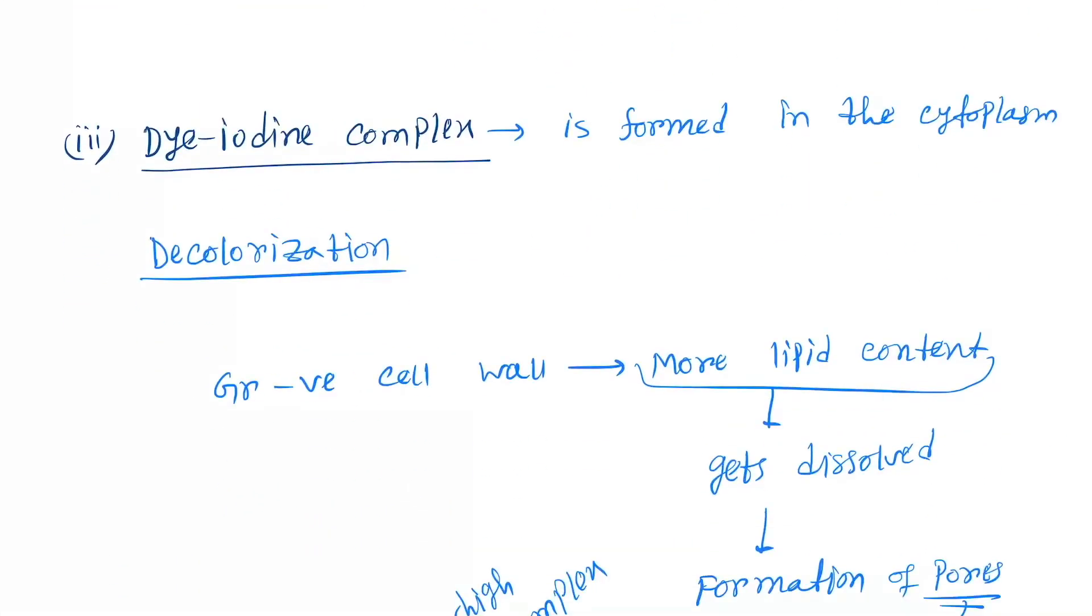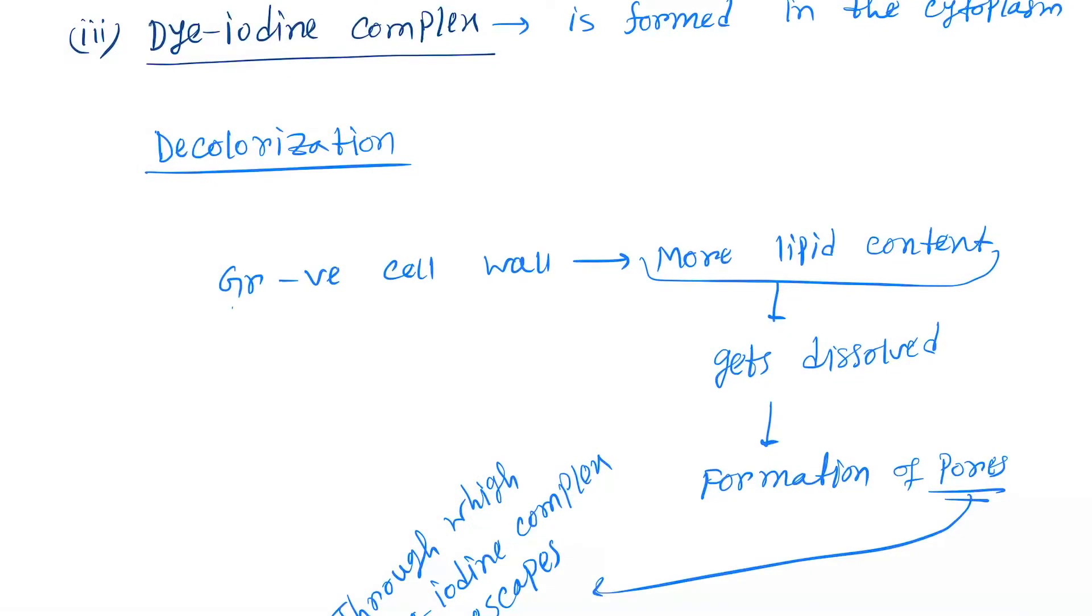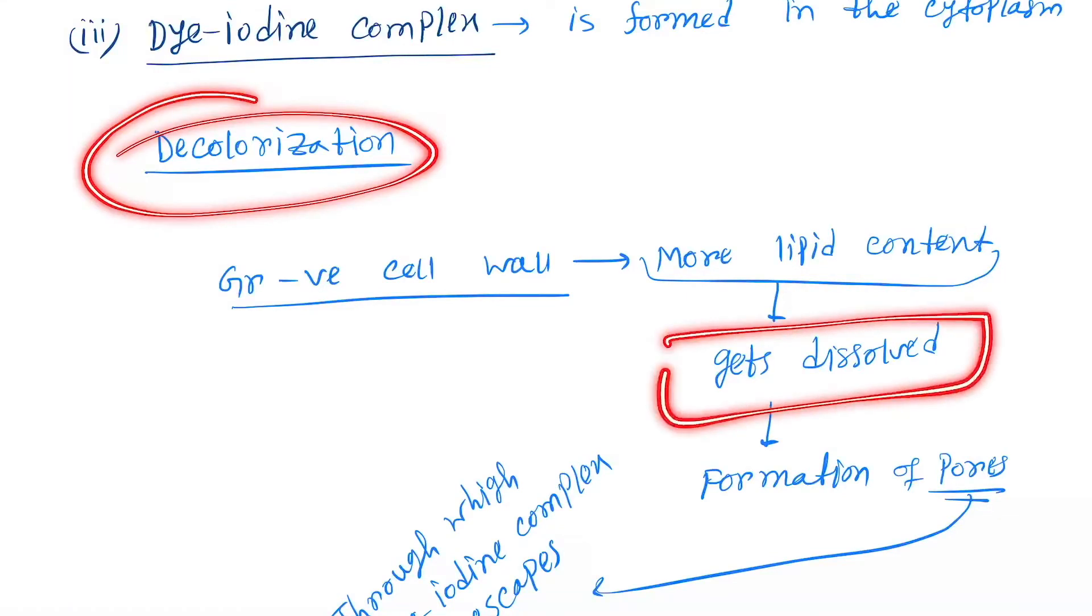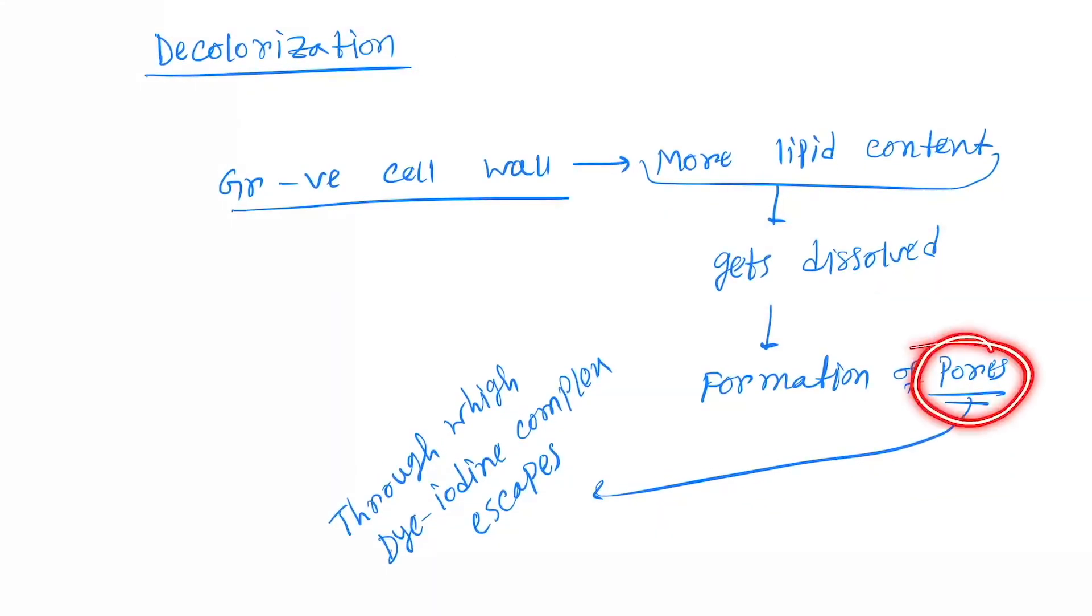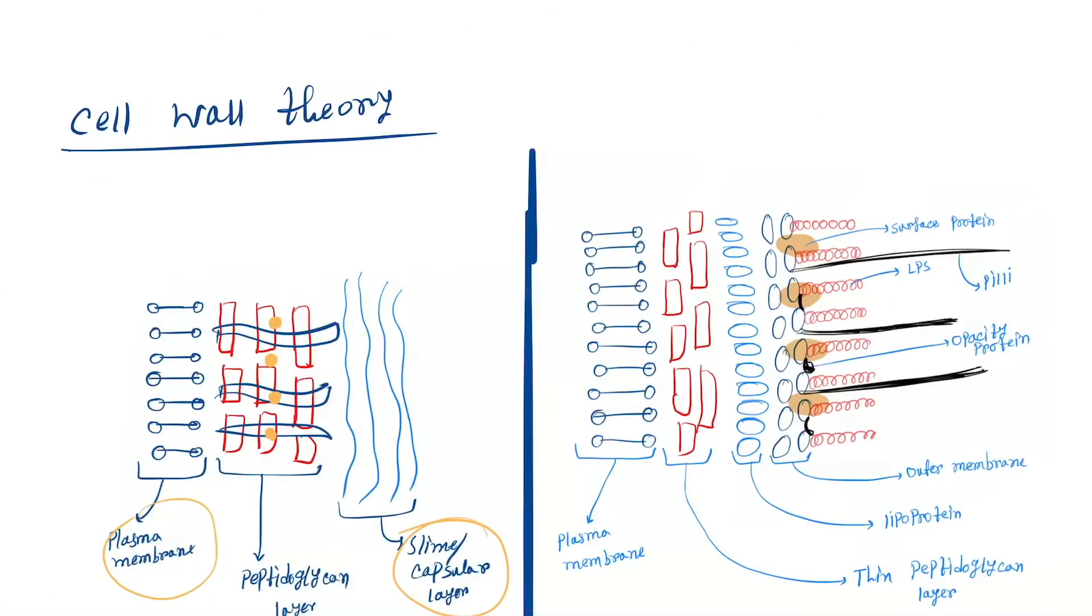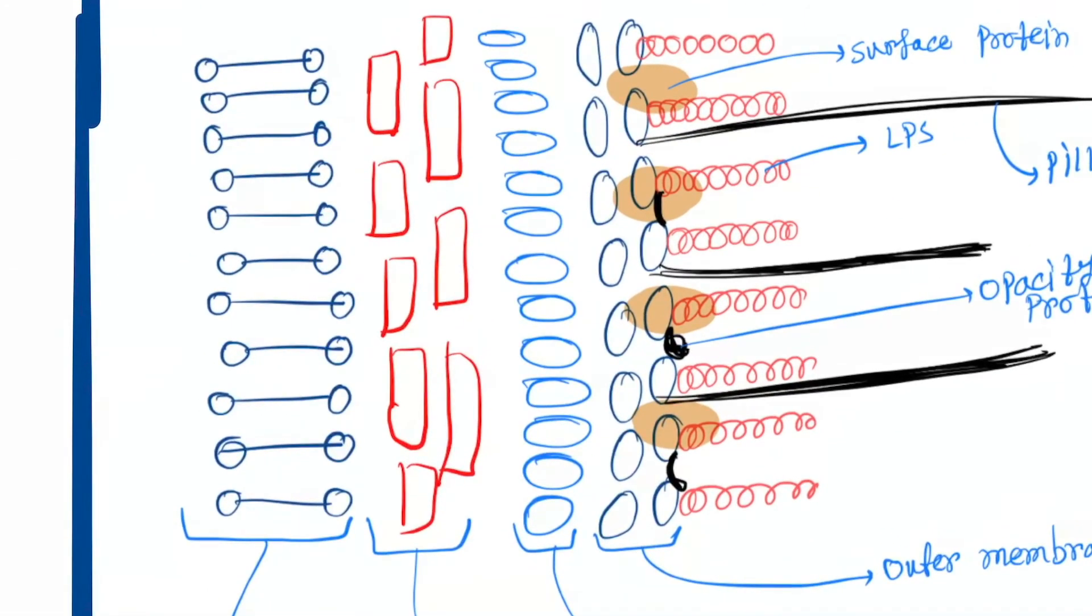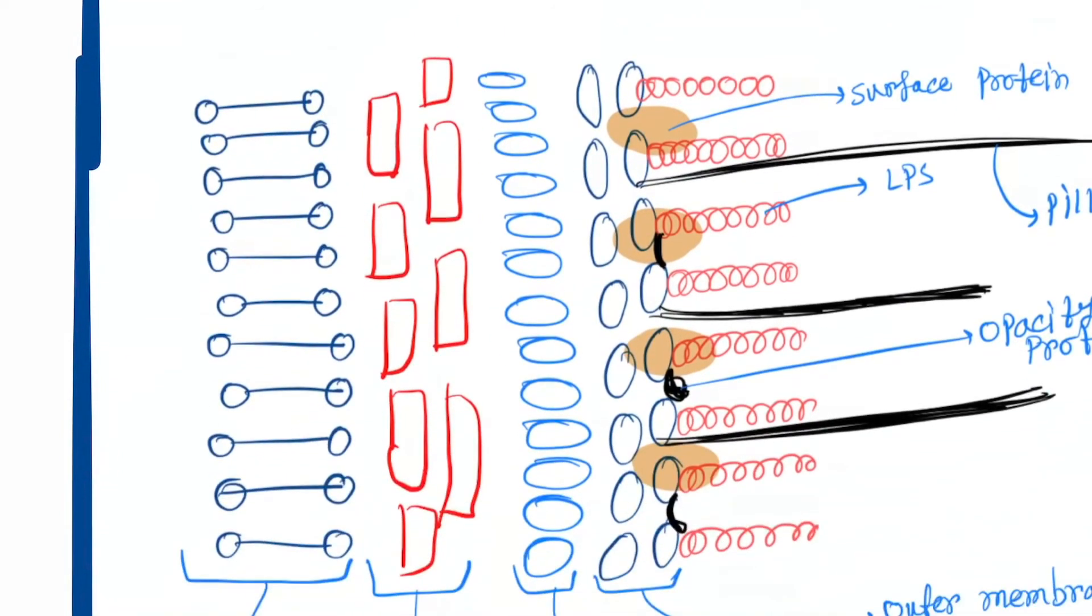Now the dye-iodine complex - due to gram negative cell wall having more lipid content, after adding the decolorizer, lipid gets dissolved forming pores through which the dye-iodine complex escapes. Here you can see pores are getting formed, and from these pores the stain will come out.